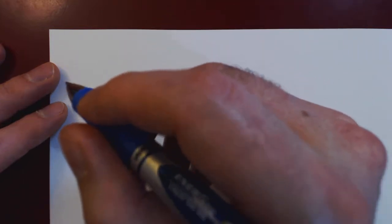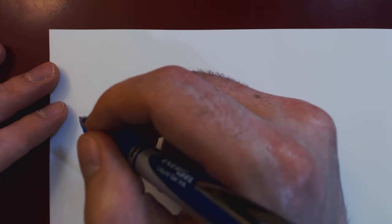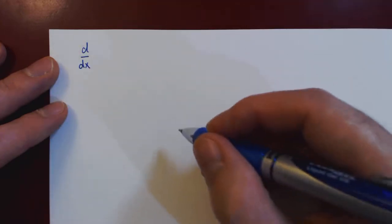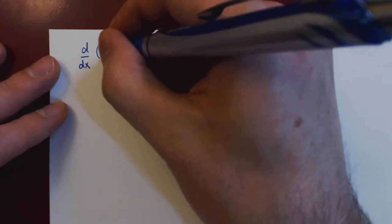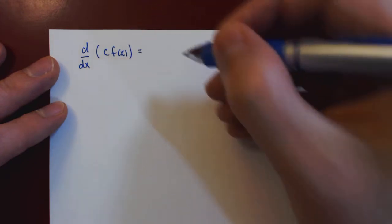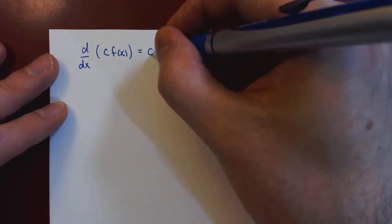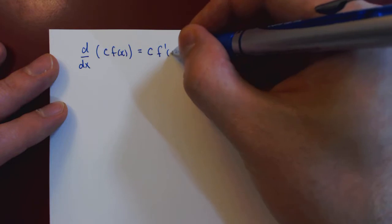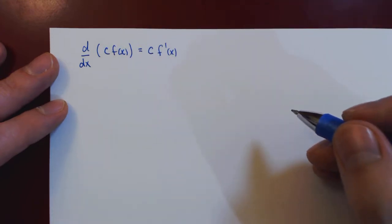Okay, so in this video, we will prove the constant multiple rule of differentiation. And if you recall, the rule states simply that if we take the derivative with respect to x of a constant multiple c times a function f of x, the result is simply the constant multiple times the derivative of the function f of x.